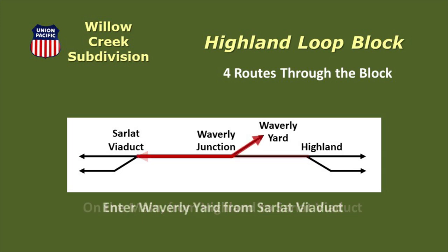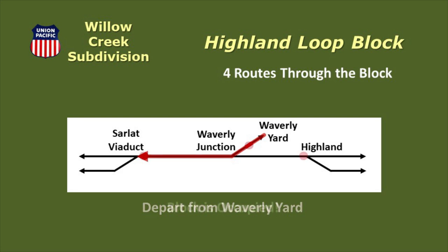A train can enter Waverly Yard from Sarlott Viaduct, and a train can depart from Waverly Yard. But we also have one more situation that the Arduino must handle: if the block is occupied, the Arduino must not allow any other trains to enter the block from any direction.